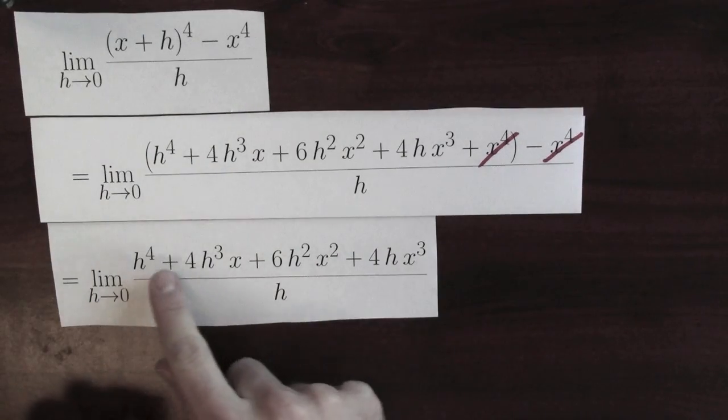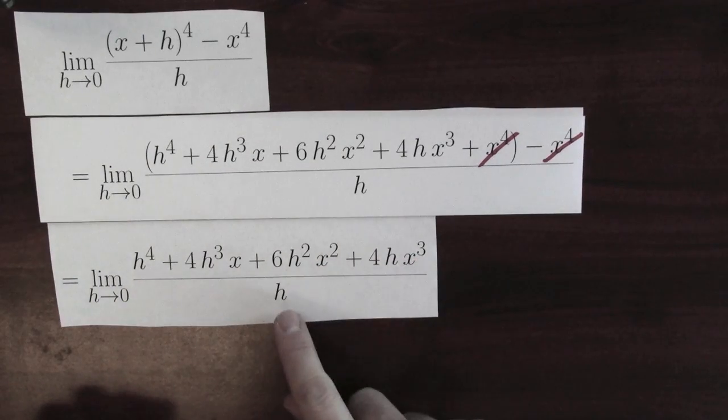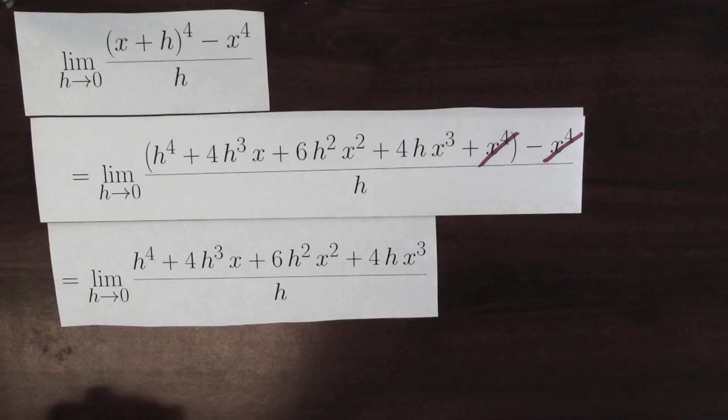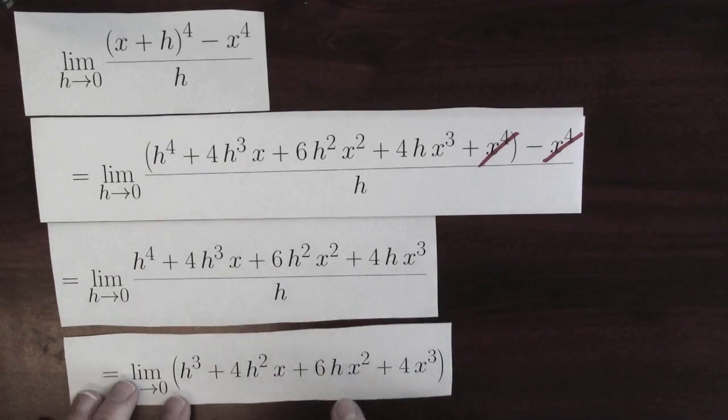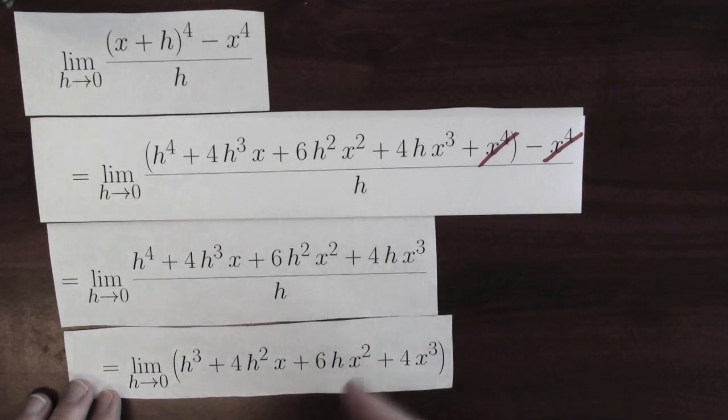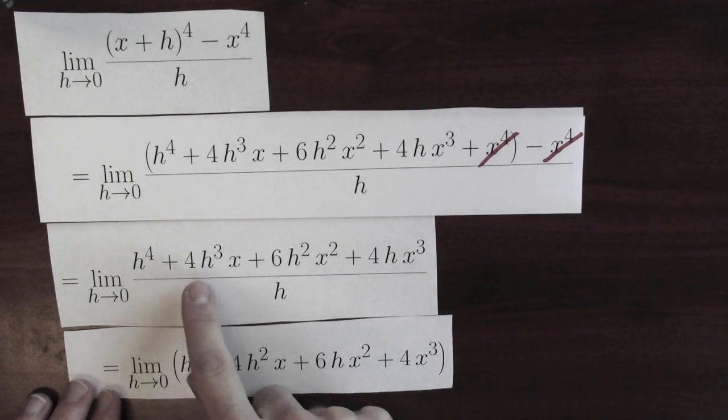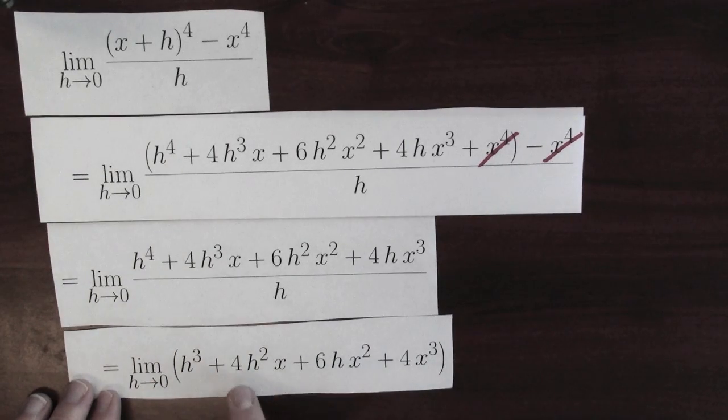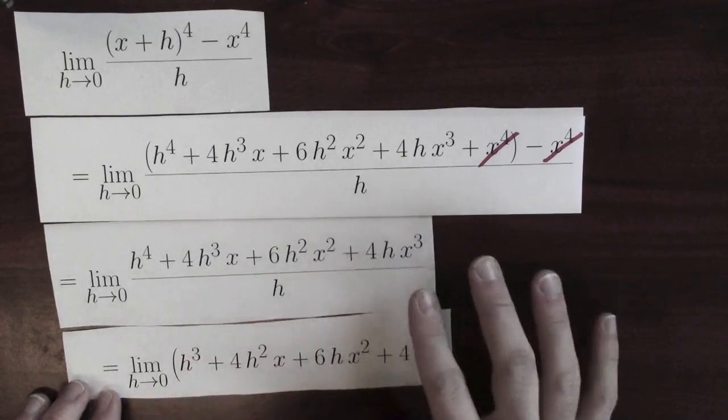But more good news. Every single term up in the numerator here has an h in it. So, I can cancel those h's without affecting the limit. And this limit is the same as the limit of h cubed plus 4h squared x plus 6h x squared plus 4x cubed. Why? Well, look. h to the 4th over h gives me the h cubed. 4h cubed x over h gives me the 4h squared x and so forth.